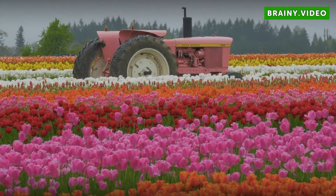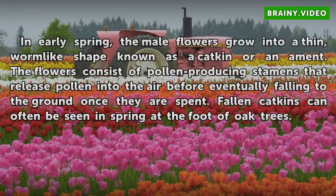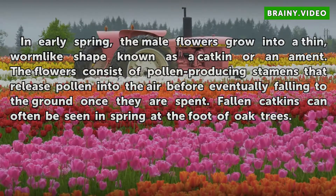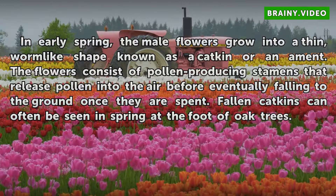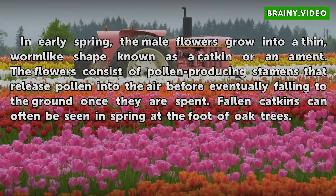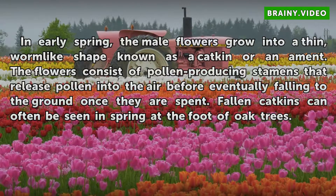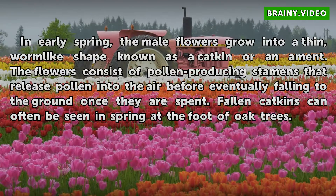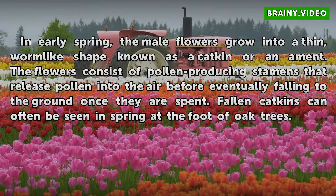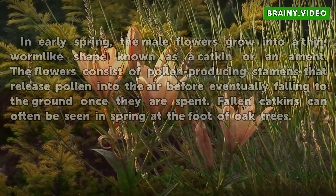Pollination. In early spring, the male flowers grow into a thin, worm-like shape known as a catkin or ament. The flowers consist of pollen-producing stamens that release pollen into the air before eventually falling to the ground once they are spent. Fallen catkins can often be seen in spring at the foot of oak trees.